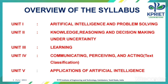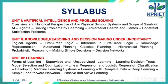This is the overview of the syllabus. Unit 1 will cover artificial intelligence and problem solving. Unit 2: knowledge, reasoning and decision making. Unit 3: learning. Unit 4: communicating. And Unit 5: applications of artificial intelligence.